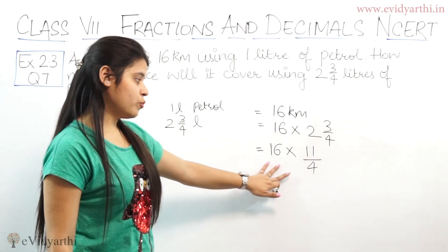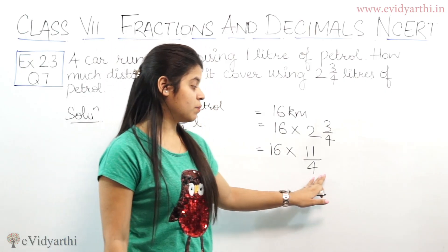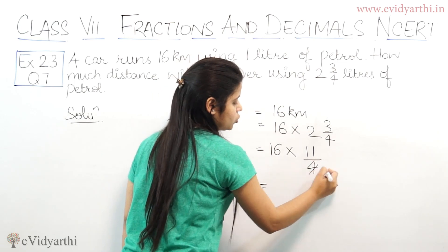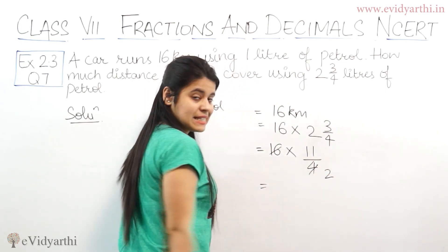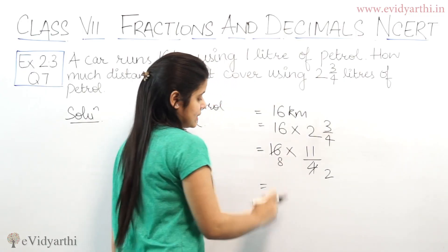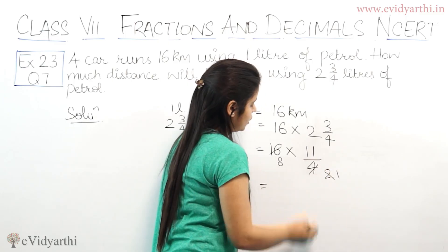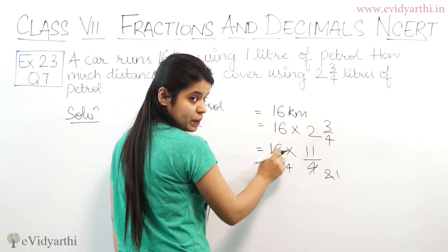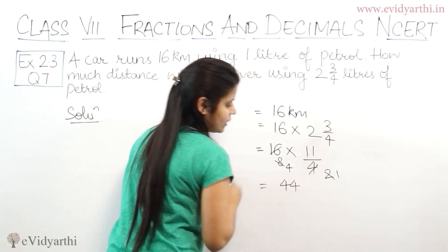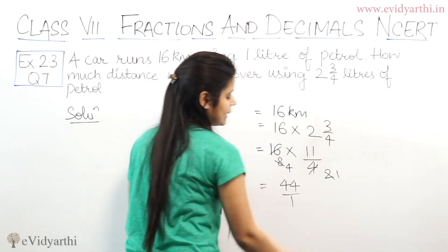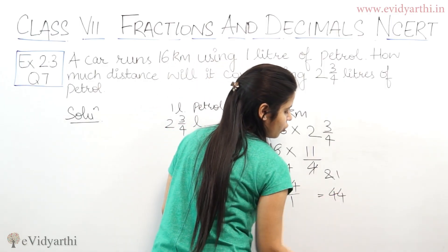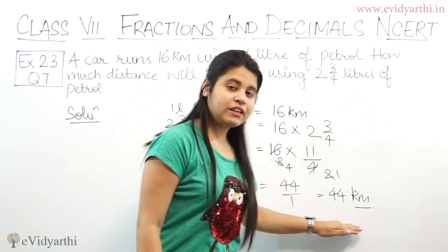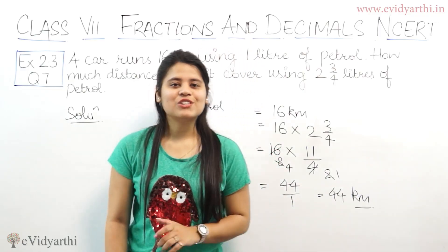Now 16 and 4 can be cancelled — both are in the table of 4. Dividing, 16 divided by 4 is 4, and 4 divided by 4 is 1. So we have 4 into 11, which is 44. The denominator becomes 1, so the answer is 44. The distance covered with 2 and 3 by 4 litres of petrol will be 44 km. This is the answer for Question Number 7.